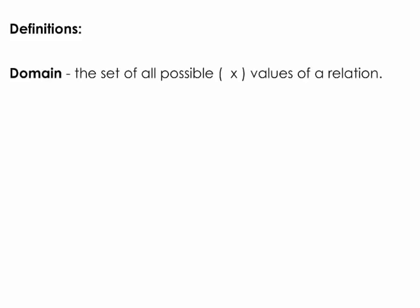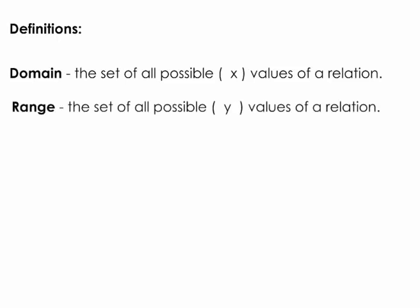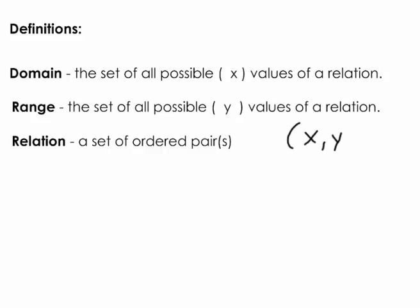First of all, the domain. When we define the domain of a function, it is all the possible x values of that function or relation. And of course, the range is all the possible y values of that function or relation. When we're talking about a relation, we're often talking about a set of ordered pairs, written as x followed by y.